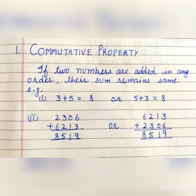Number 1: Commutative property of addition. If two numbers are added in any order, their sum remains the same. For example, 3 plus 5 equals 8, or 5 plus 3 equals 8. Similarly, the second example follows the same pattern.